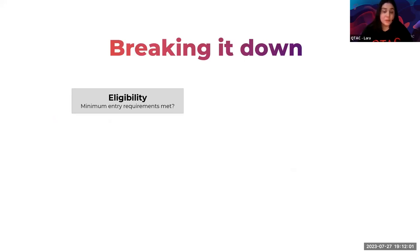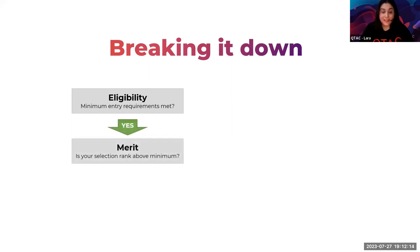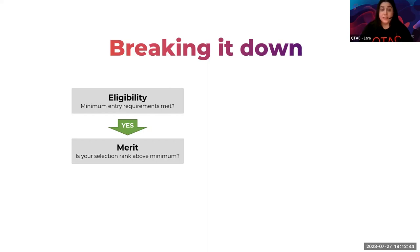Breaking it down: the first thing we check is eligibility — have minimum entry requirements been met, like a subject prerequisite? If yes, we then check your merit, which could be your ATAR or a qualification. You have to meet eligibility first, then your merit must be above the minimum to be considered for a place. You'll then go into a pool with all other eligible students to compete for a place. The minimum ATARs on our website are a guide only — this is what happened last admissions year, not a guarantee of what will happen this year.